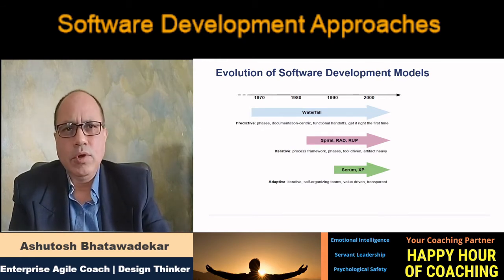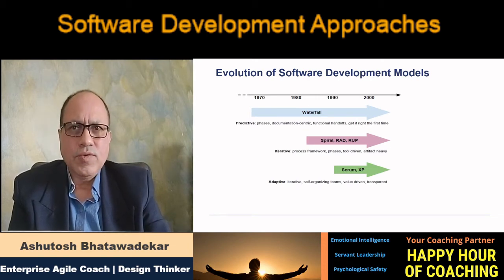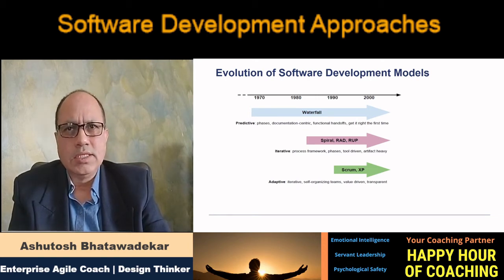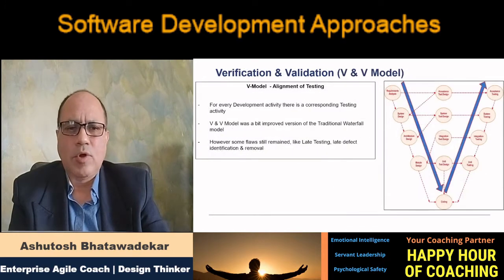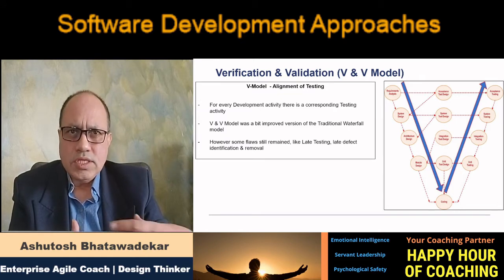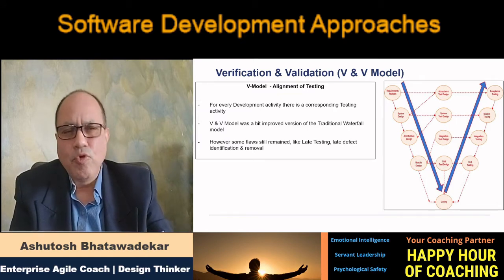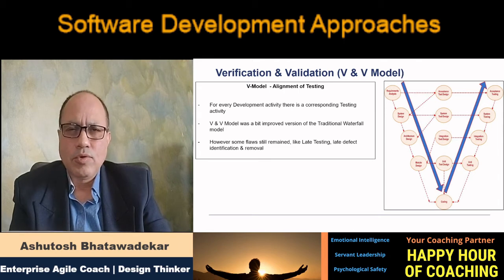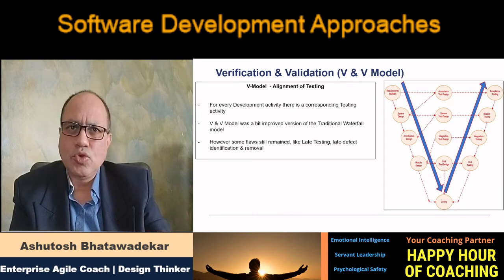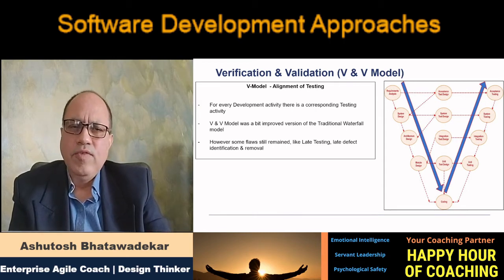The first one is what we call the V-Model of software development, also called the Verification and Validation Model. This model came in as an improvement over the traditional waterfall approach. One of the known challenges of waterfall was that the testing phase was back-loaded — testing used to happen towards the end.